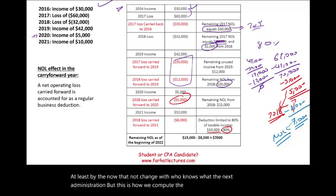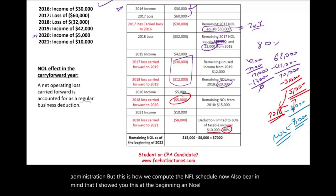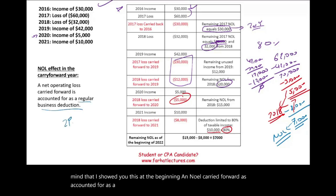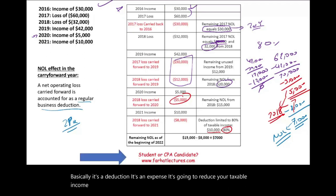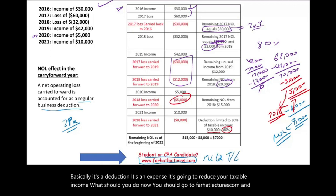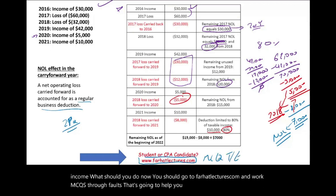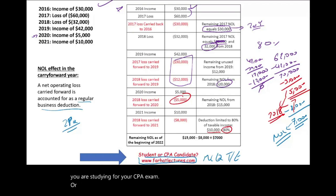An NOL carried forward is accounted for as a regular business deduction, as shown on line 29A — it's a deduction that reduces your taxable income. You should go to farhatlectures.com and work through multiple choice questions and true-false questions to better understand this topic, whether you are studying for your CPA exam or are an accounting student. Good luck, study hard, invest in yourself, and stay safe.